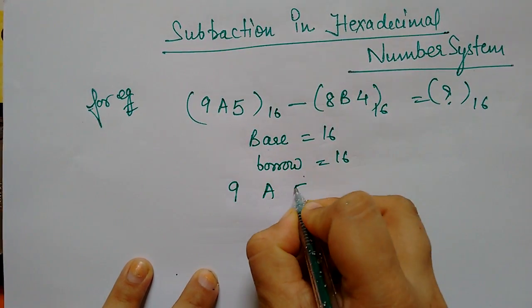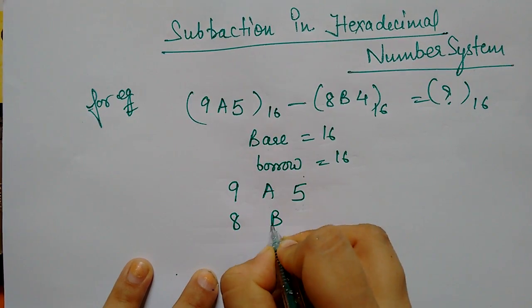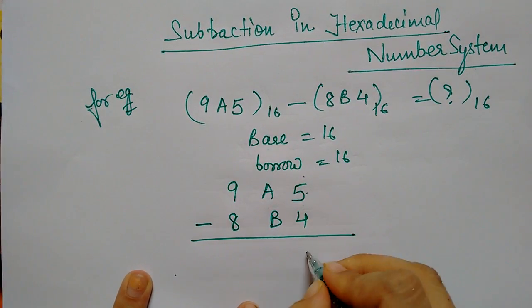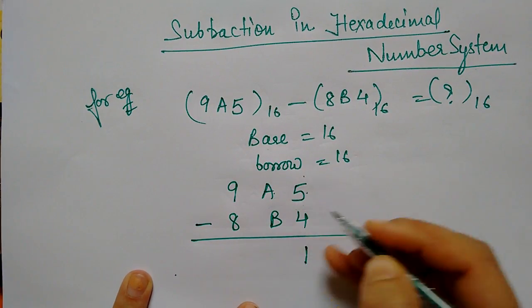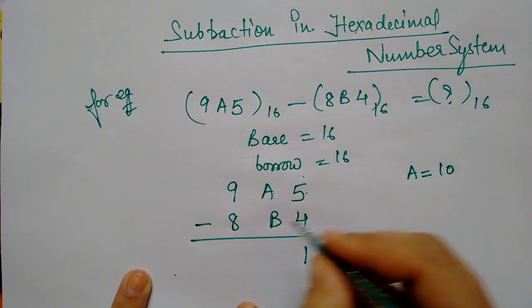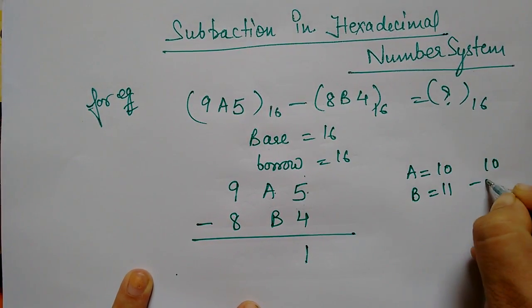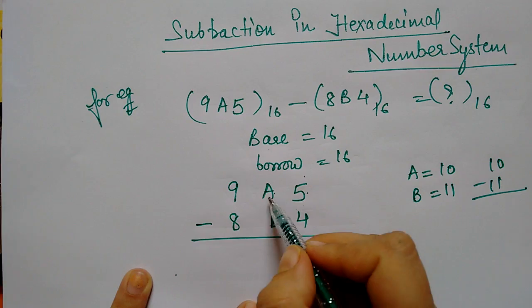Now let's write it 9A5, and 8B4. So you have to subtract it. Now 5 minus 4 is 1. A minus B. Now in hexadecimal, A is 10 and B is 11. So 10 minus 11, so you have to borrow it.